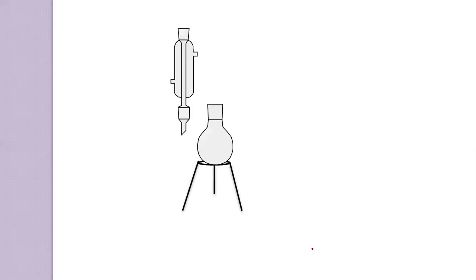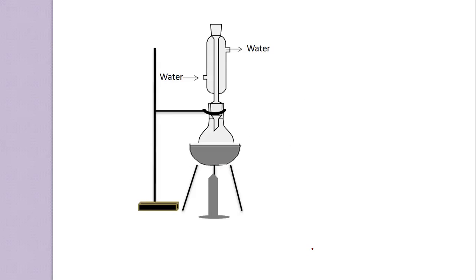Next is the procedure. In a round bottom flask, place a mixture of benzoic acid, methanol and concentrated sulfuric acid. Then attach a reflux condenser and boil the mixture gently for 4 hours.